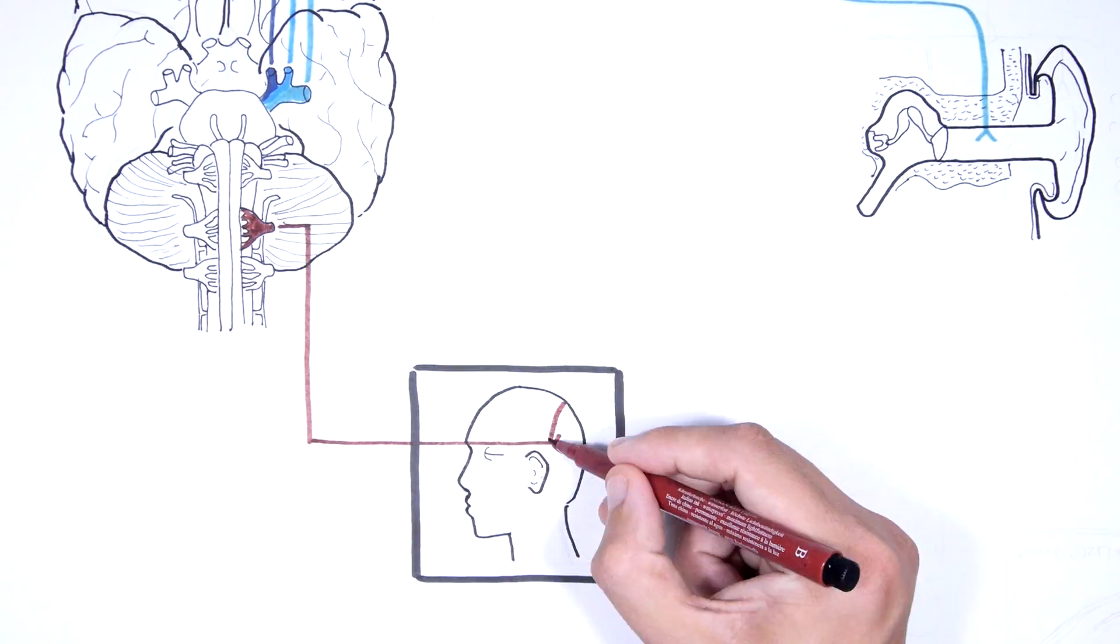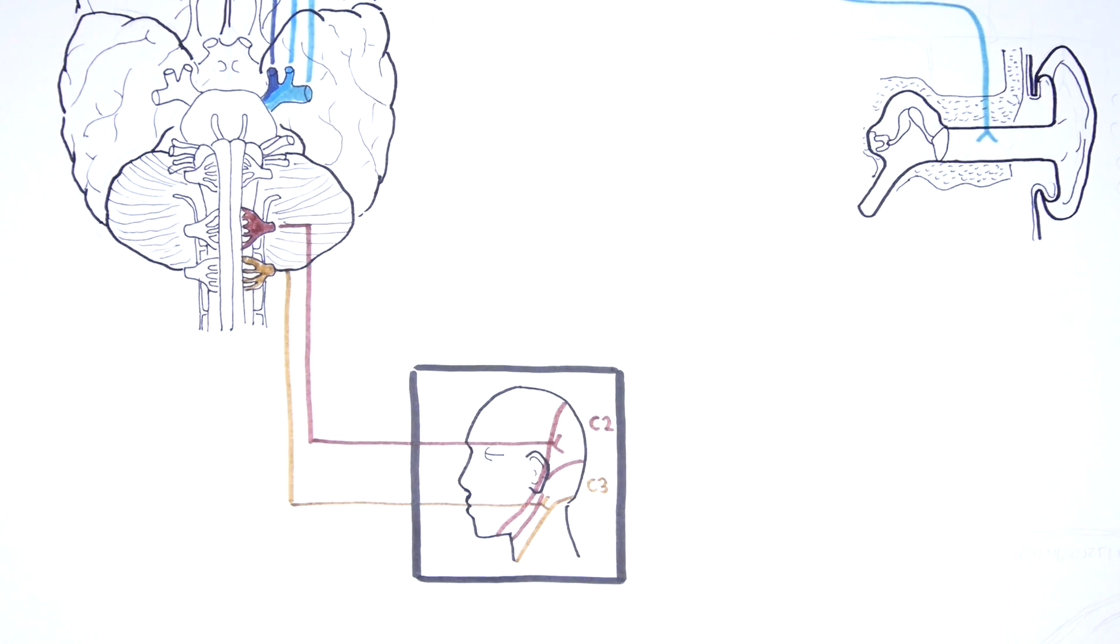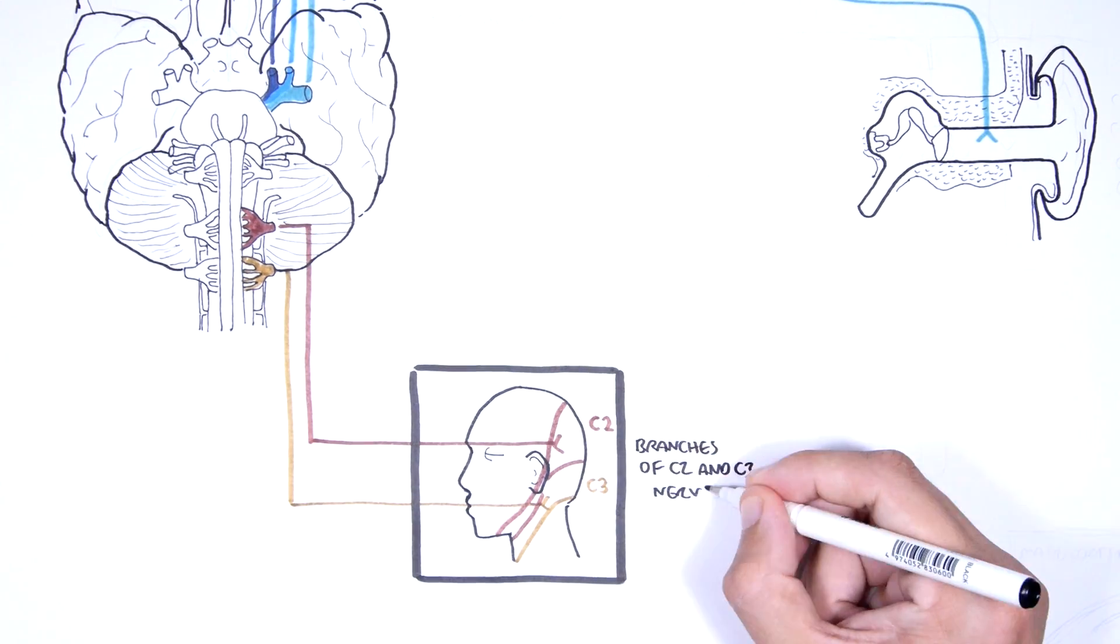Branches of the cervical spinal nerve two and cervical spinal nerve three innervate the other major portion of the external ear.